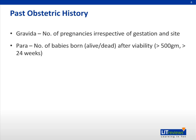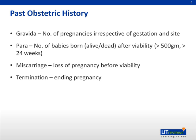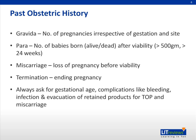Parity, or para, is the number of babies born alive or dead after the period of viability, which is either more than 500 grams or more than 24 weeks. Miscarriage means loss of pregnancy before the period of viability. Termination is the ending of a pregnancy. When a pregnancy has ended before 24 weeks, either as a miscarriage or termination, you should always ask for the gestational age at which it happened, if there were any complications like bleeding or infection, and if they had to go for evacuation of retained products. Also remember that ectopic pregnancy adds to the gravida.